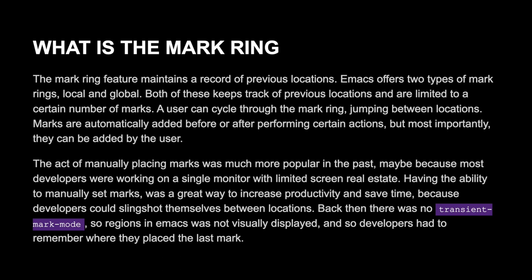So what is the Mark Ring? The Mark Ring feature maintains a record of previous locations. Emacs offers two types of Mark Rings: local and global. Both of these keep track of previous locations and are limited to a certain number of Marks. A user can cycle through the Mark Ring jumping between locations. Marks are automatically added before and after performing certain actions, but most importantly they can be added by the user.